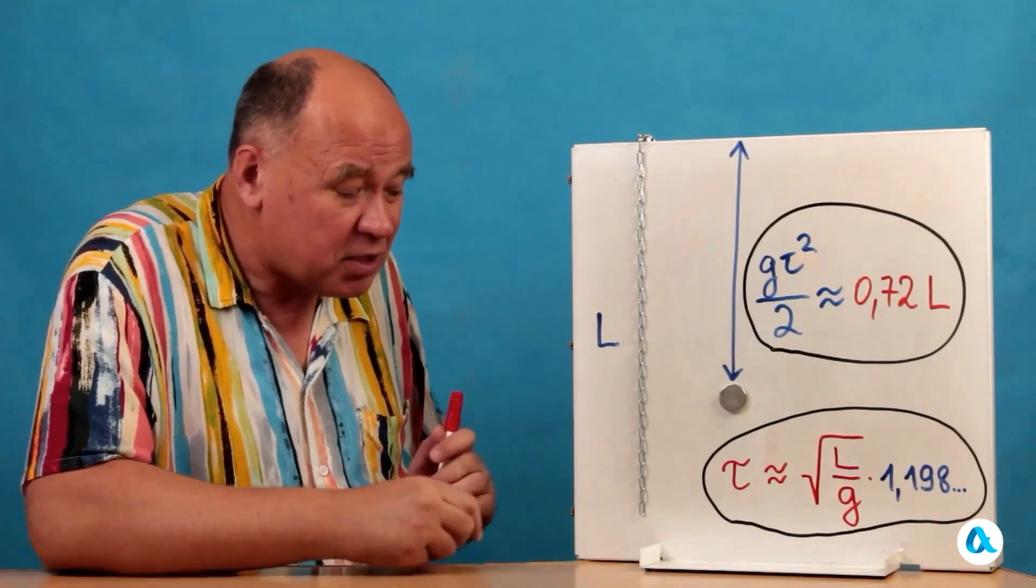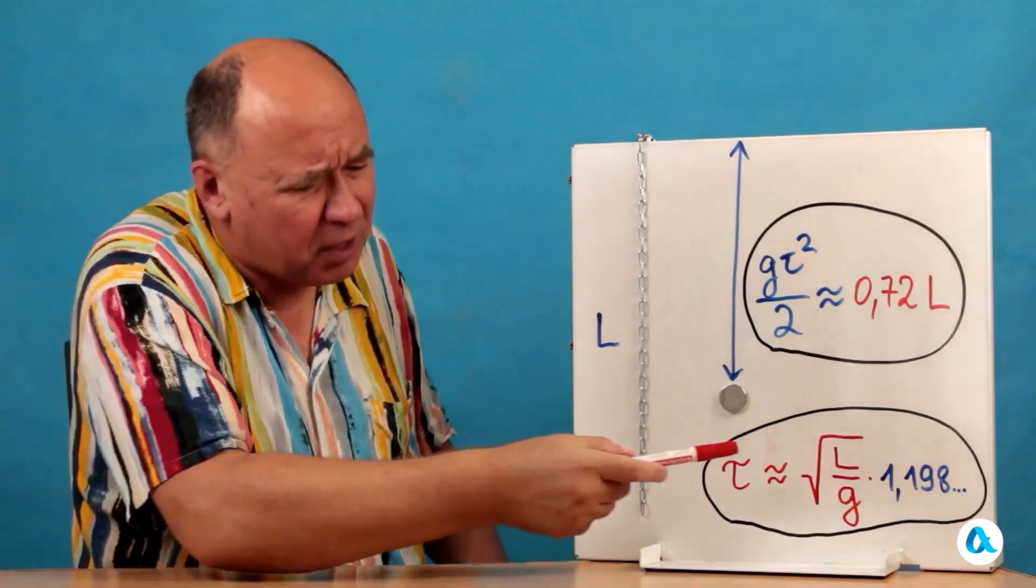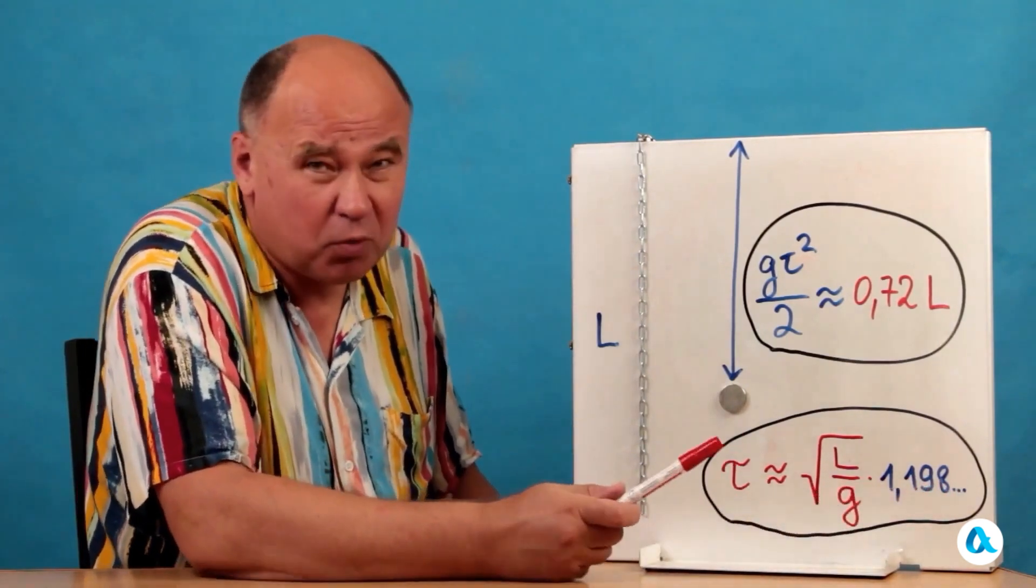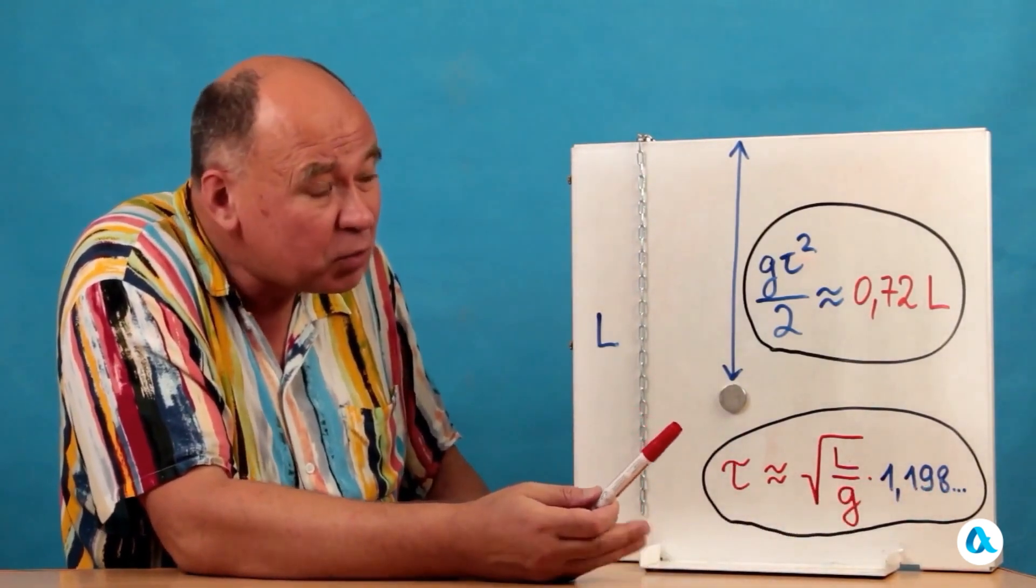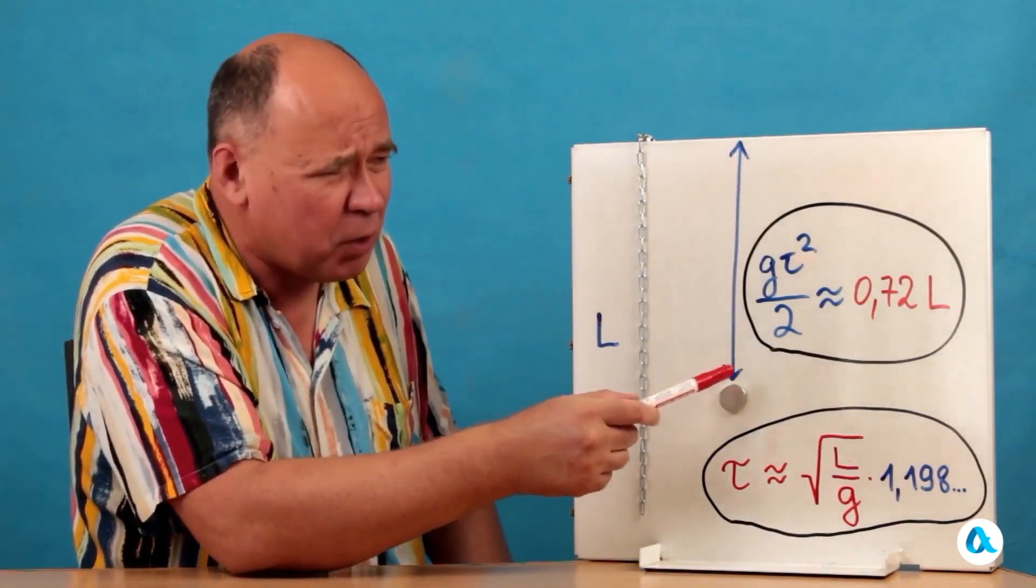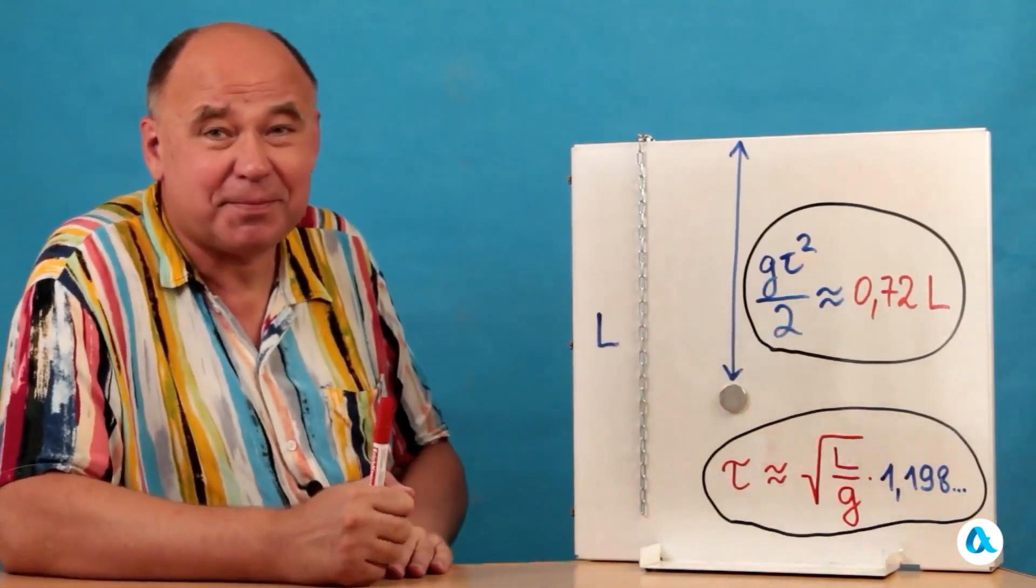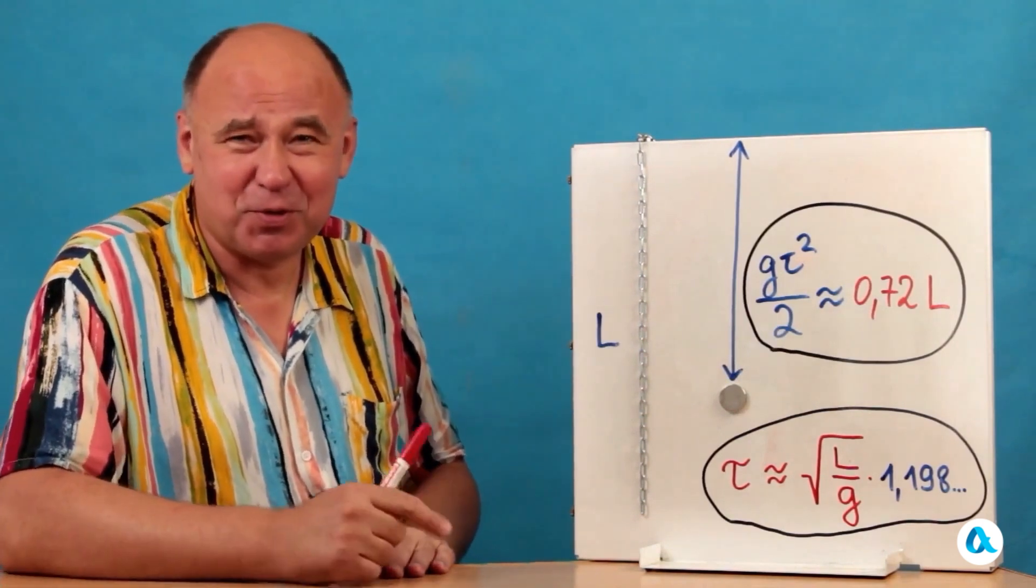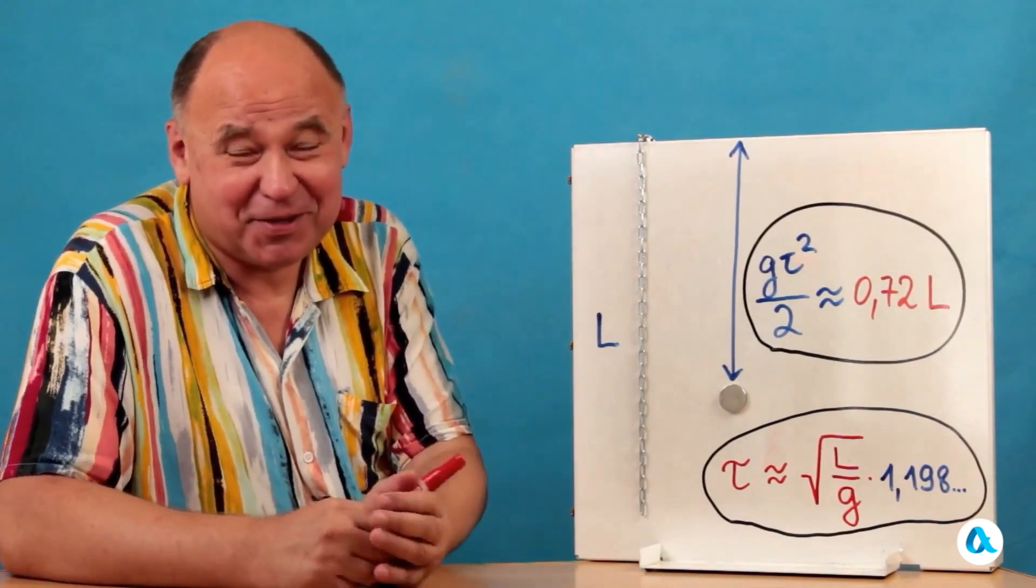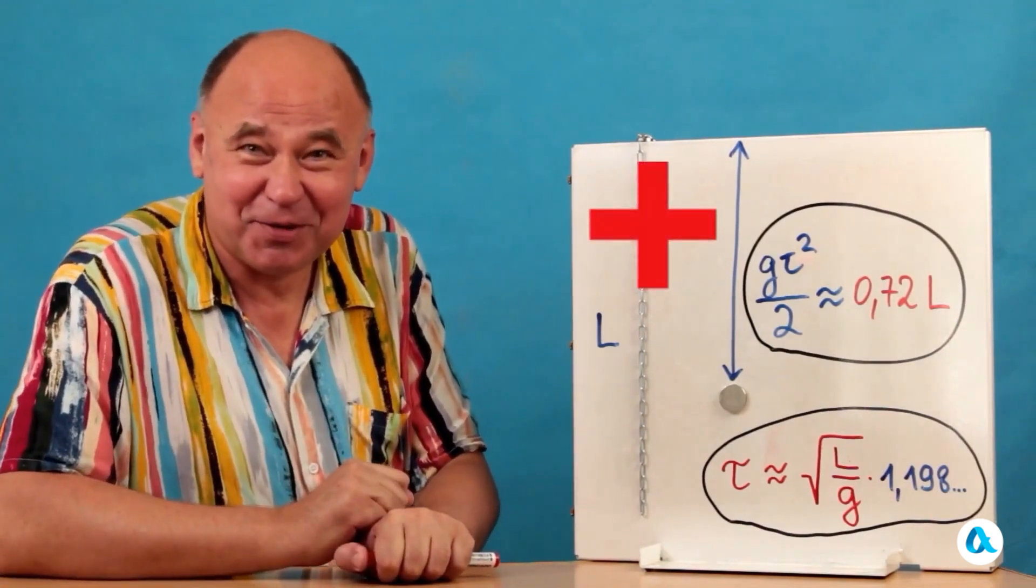And after several integrations, we find that the time it takes for the chain to fully straighten out is equal to the square root of L over g. And there's also a numerical coefficient of 1.198, which is about 1.2. And accordingly, during this time in free fall, the ball travels a distance of g-tau squared over 2. We substitute tau here and get 0.72L. And in the experiment, as we remember, we obtained 0.73. And thus, we have achieved a wonderful agreement of the theory with the experiment and, as our young physicist friend said again, let's set ourselves up at this point a little plus.